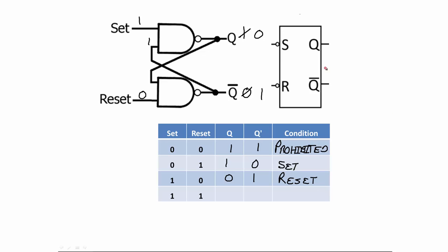The last position in the NAND latch truth table is where both inputs are ones. With ones on both inputs and the previous feedback values still present, nothing changes — a one and one gives a zero, one and zero gives a one, maintaining the same output. So with set=1 and reset=1, the NAND latch holds its previous state — this is the hold condition.